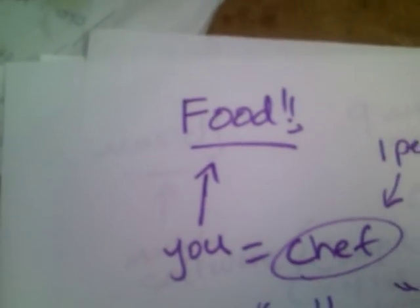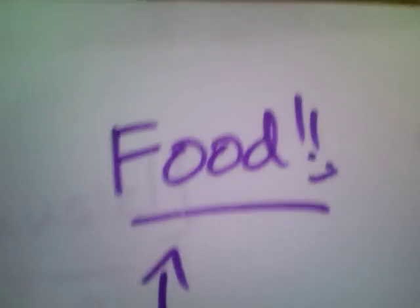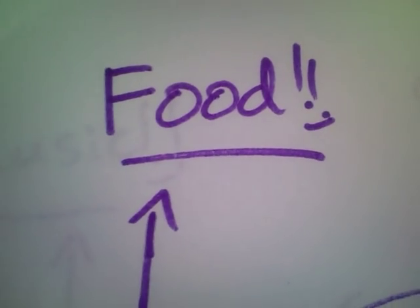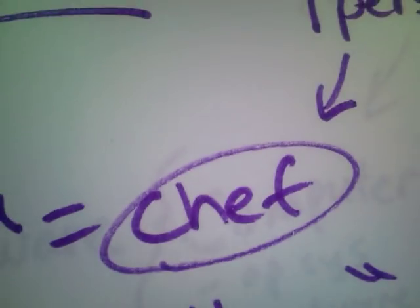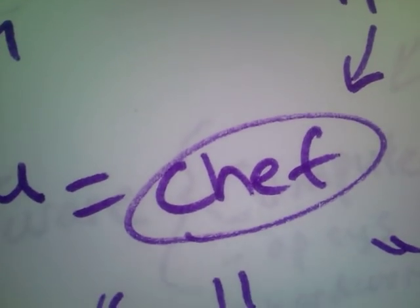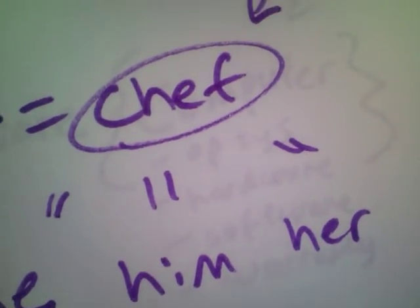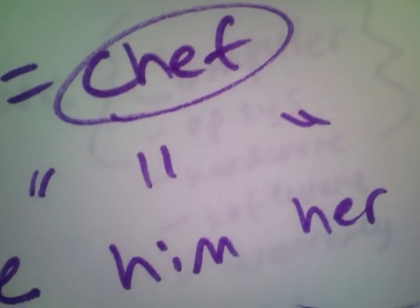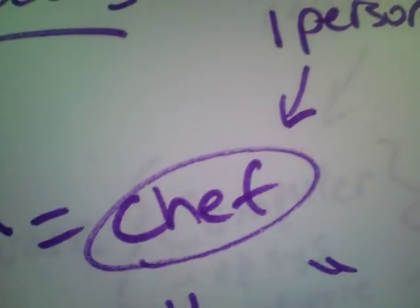Now let's look at an analogy. You want food, you are hungry. Who's going to cook the food? You, and that makes you the chef. But I have other things to do. We can't always be our own chef. So why don't we have one person be the chef? And we can all go to that one person when we need the food.